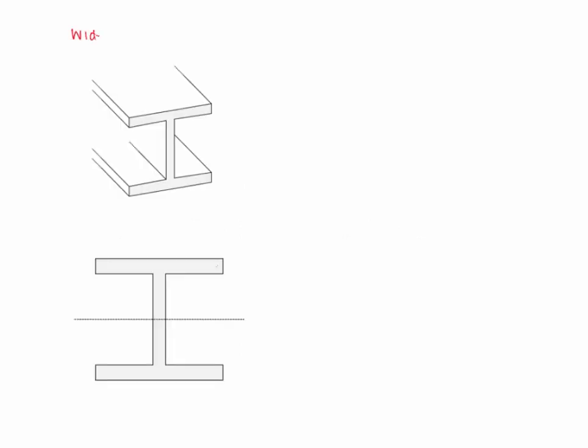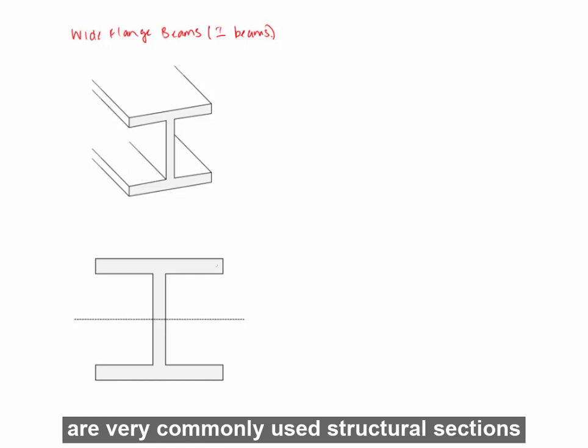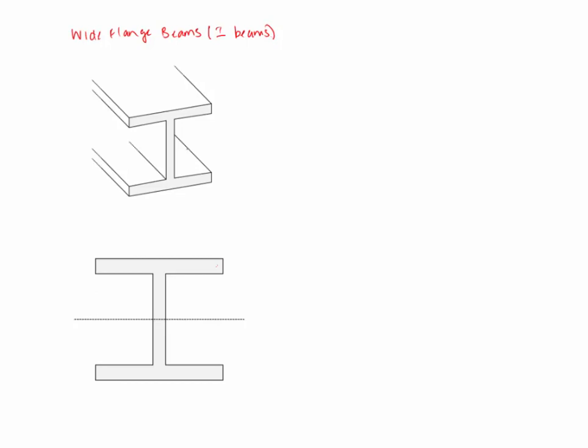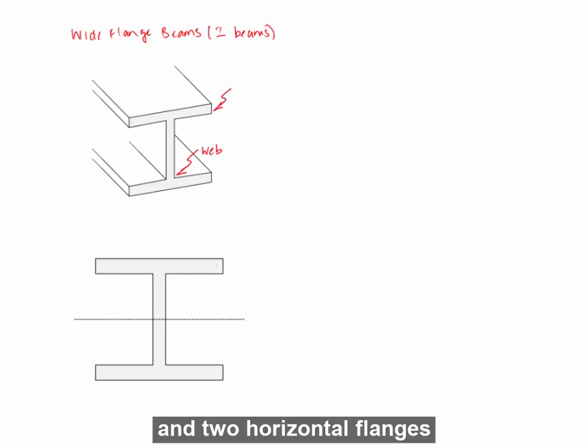Wide flange beams, or I-beams, are very commonly used structural sections, and they are comprised of a vertical web and two horizontal flanges.